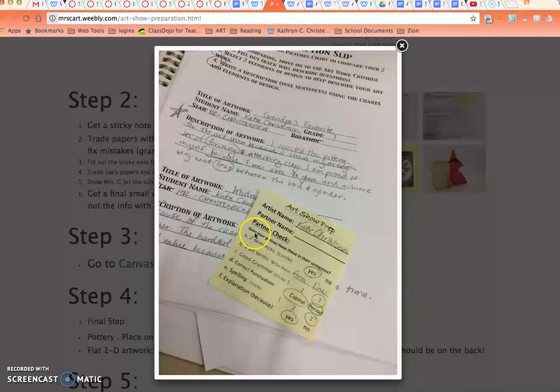You have to answer these questions looking at your partner's things. So it says does your partner have these things in their sentences? Do they have two sentences? Well, I'm looking and here's a period and here's a period and so I can say yes, I can circle that. Do they have two art terms? Write them. So I wrote both of the art terms that are listed and I circled them for them on the paper. Make sure you're circling them for them because then they will know where they are.